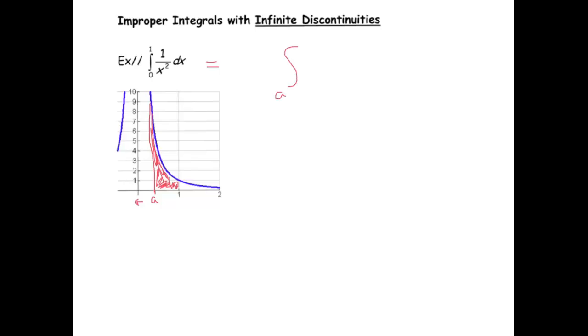This time the infinite discontinuity happens at zero. The way we handle this is we make it a definite integral. I'm going to put an a here, and rather than get the area from zero to one — since that involves an infinite region — we're just going to get an expression for this area, and then push a closer to zero from the right-hand side. So I'm going to write this integral as the integral from a to one, and then let a go to zero from the right.